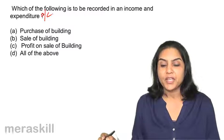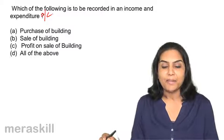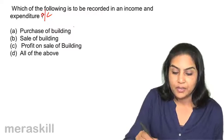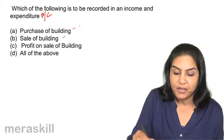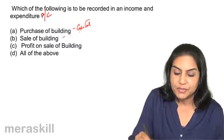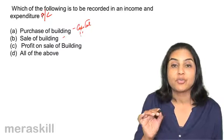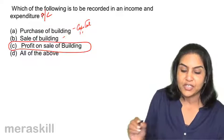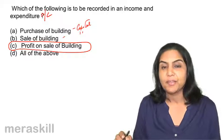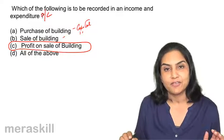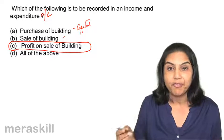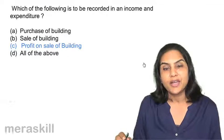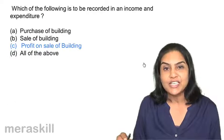The correct answer is C. Purchase of building and sale of building are both capital items. Capital items do not go to income and expenditure account. The profit on sale of building, however, does go to the income and expenditure account — the sale itself goes to receipts and payments, but only the profit made on the sale goes to income and expenditure. Correct answer is option C.